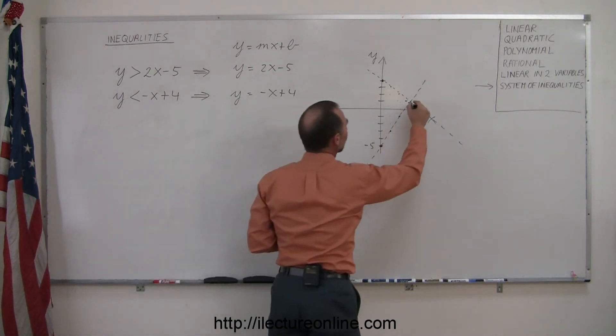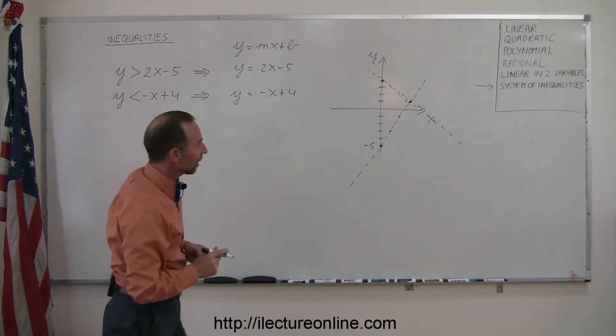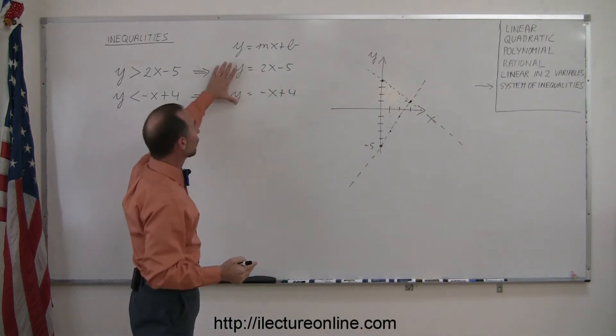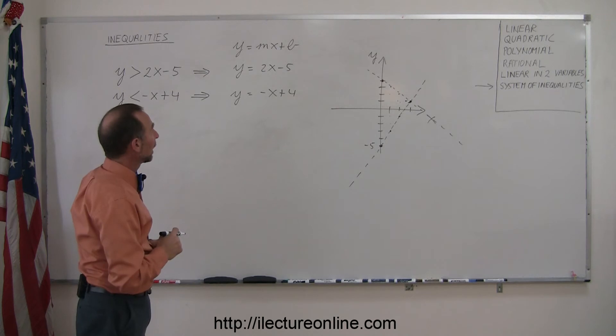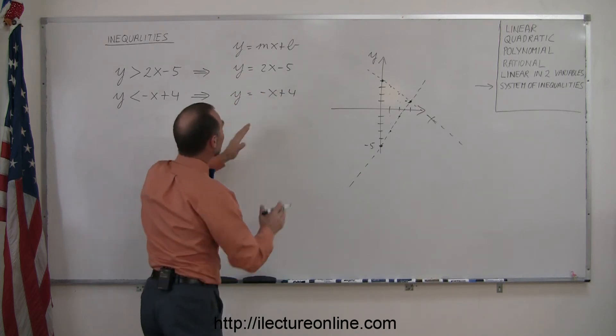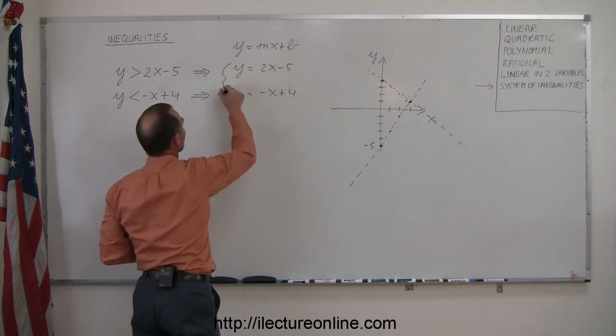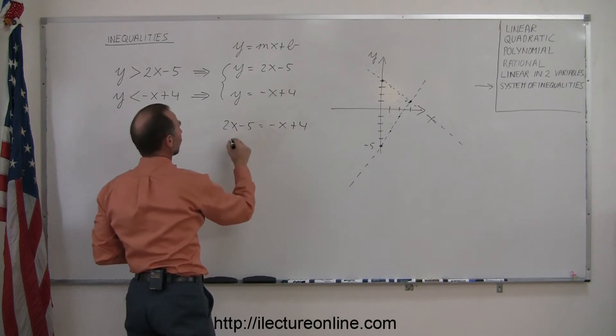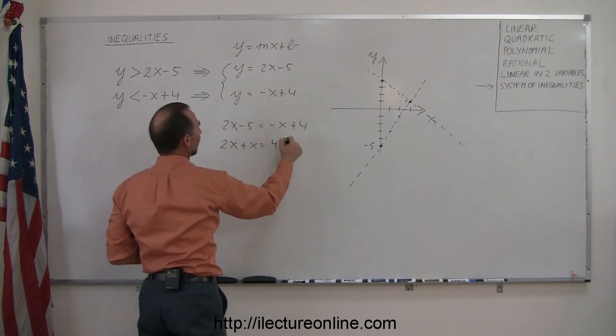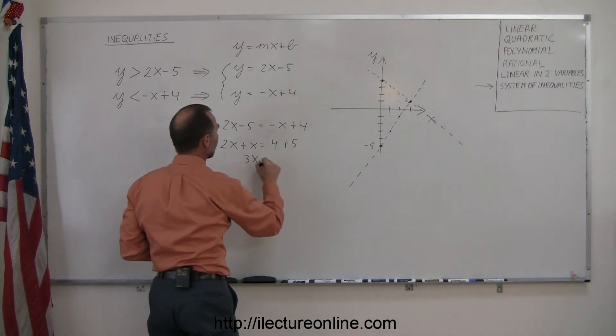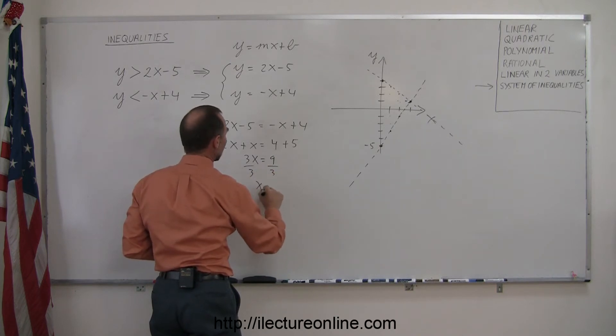It's not a bad idea to find where those two lines cross. So let's find that point. It looks like it's probably the point 3, 1, but just to make sure, let's solve these two equations simultaneously. We can do that by setting these two equal to each other. If y is equal to this and y is equal to this, then from these two, 2x minus 5 equals minus x plus 4. Moving all the x's over to one side, we get 2x plus x equals 4 plus 5. Combining like terms, we get 3x equals 9. Divide both sides by 3, we get x equals 3.